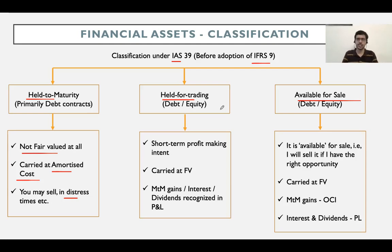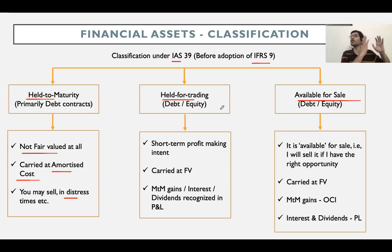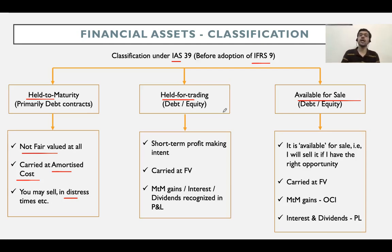Since my intent is to make short-term profits or losses, I will carry it on my balance sheet at fair value. I will always show it at fair value because I have to show investors the fair value. In the case of held to maturity, I didn't intend to make gains or losses through fair value fluctuations, so I didn't show fair value. But here, making gains or losses through fair value fluctuations is my intent, so I always carry it at fair value. The mark-to-market gains are recognized in the P&L.